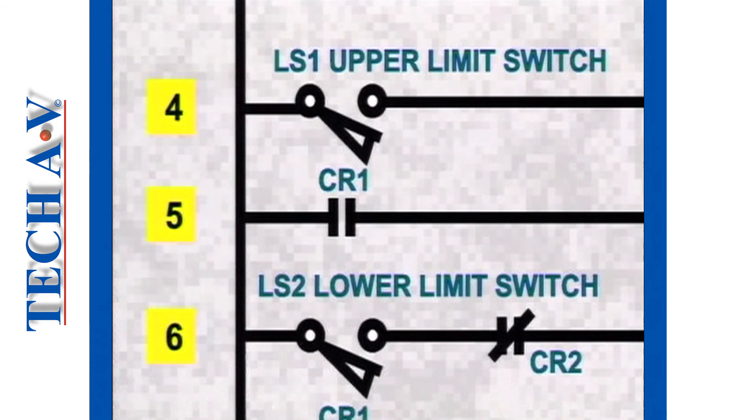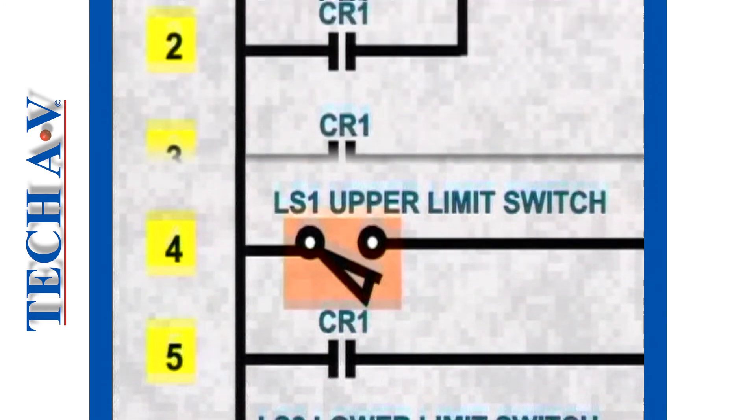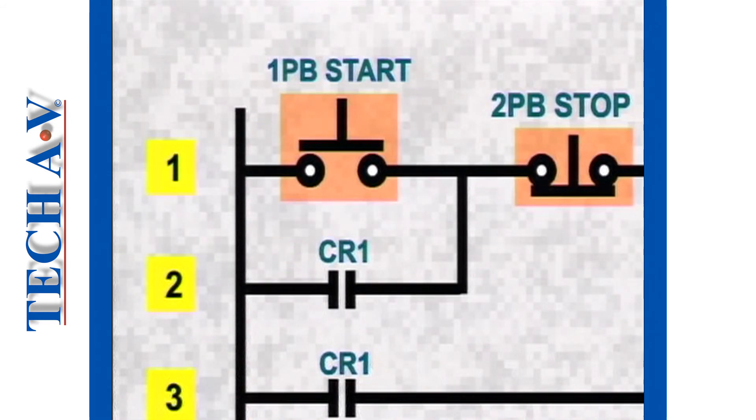At the left hand rail, we find the input devices which sense or gather information. Here, for example, are the upper and lower limit switches, which measure and sort the passing blocks. And over here, we see the input switches which start and stop the machine.